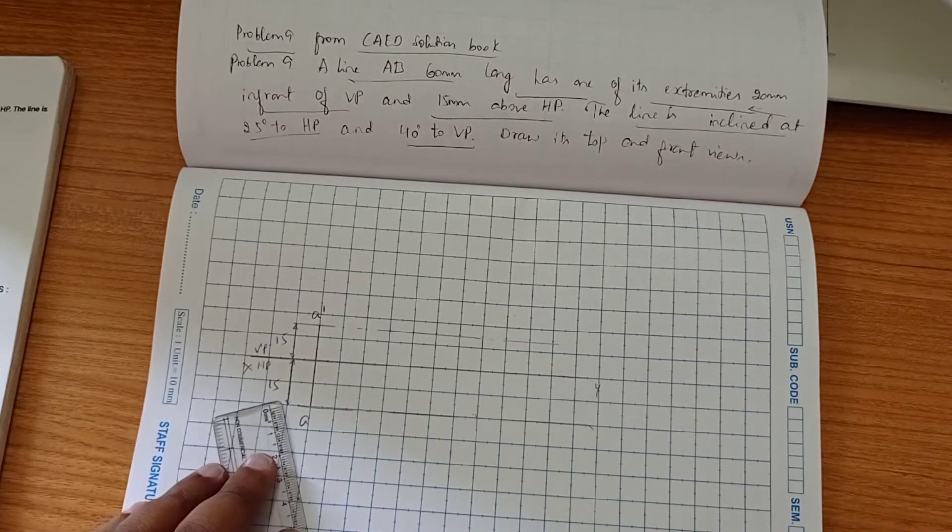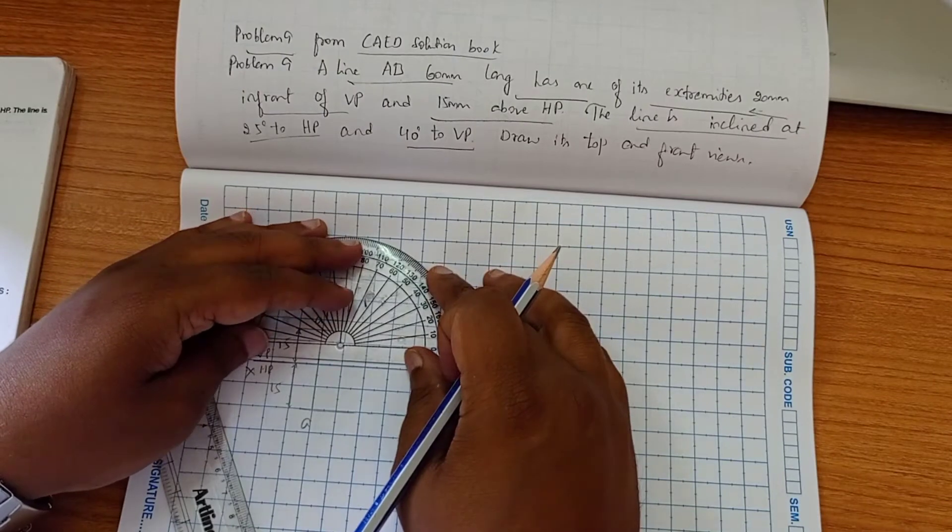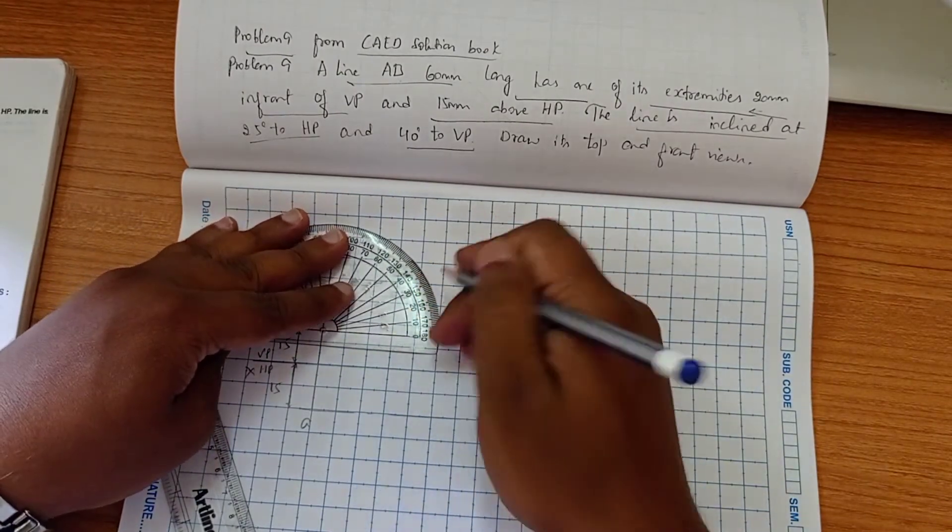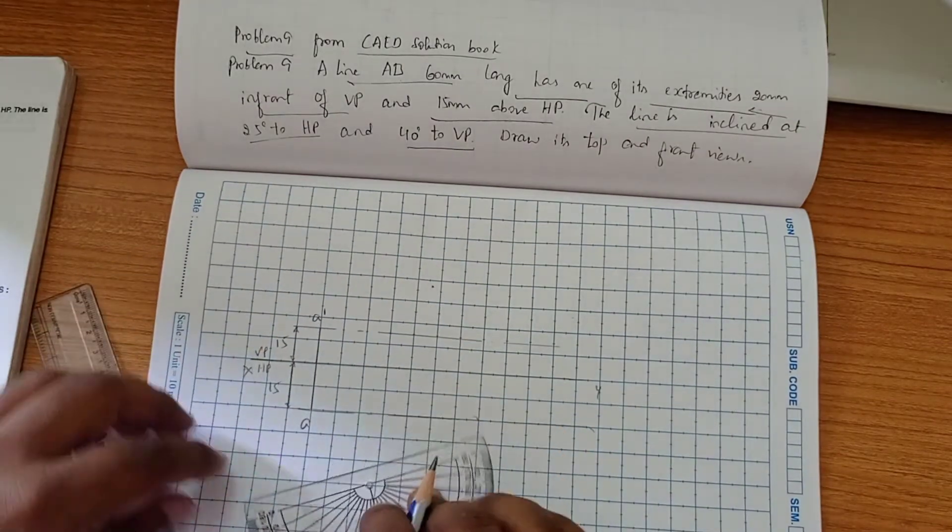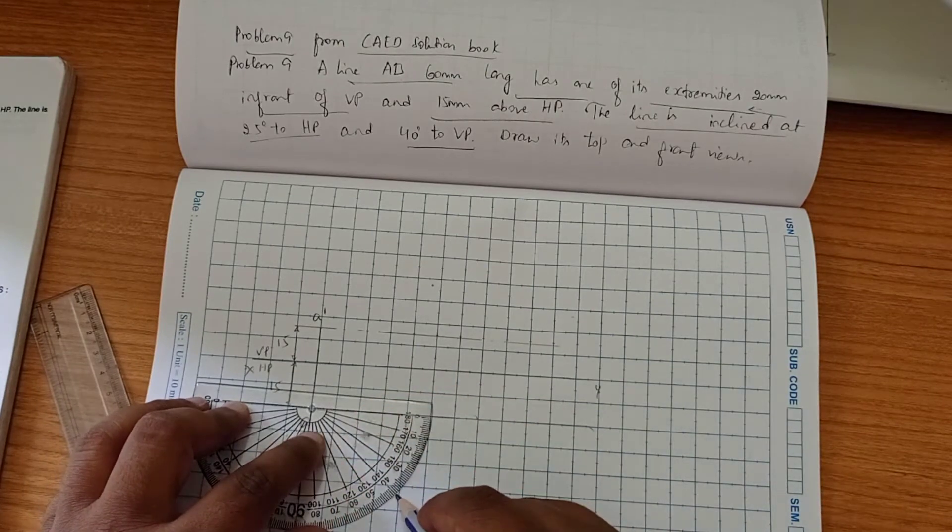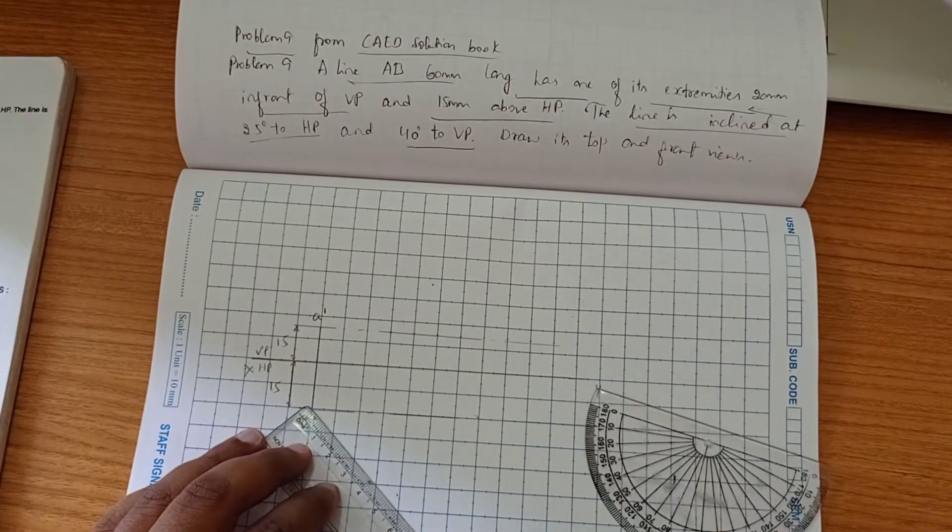We have angle of inclination here, 25 degree to HP and 40 degree to VP. The length of line we have to draw is 60 mm.